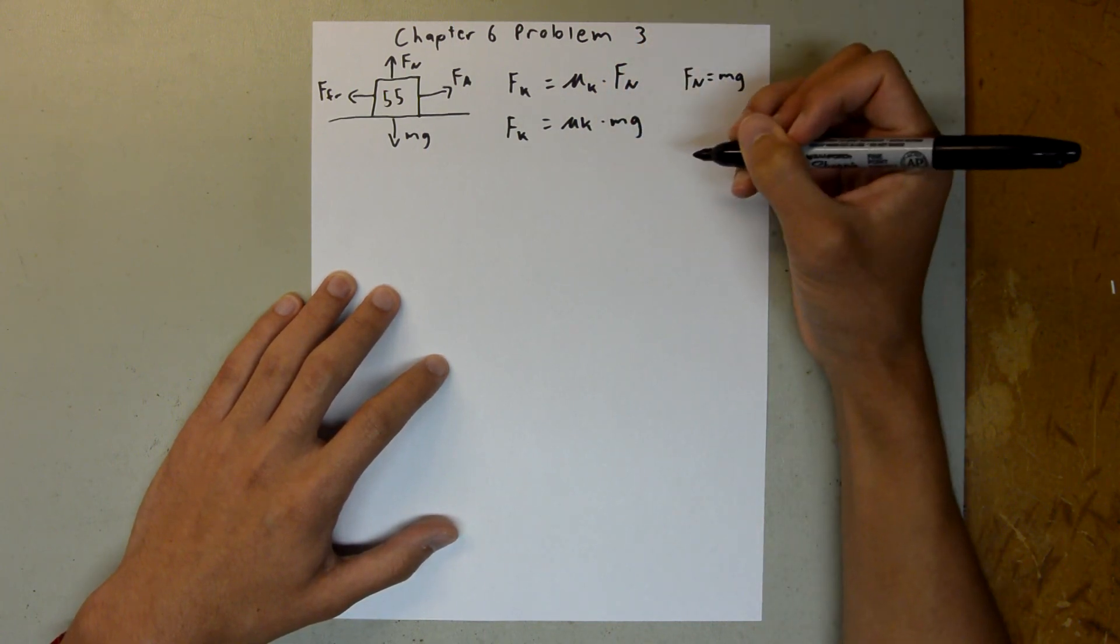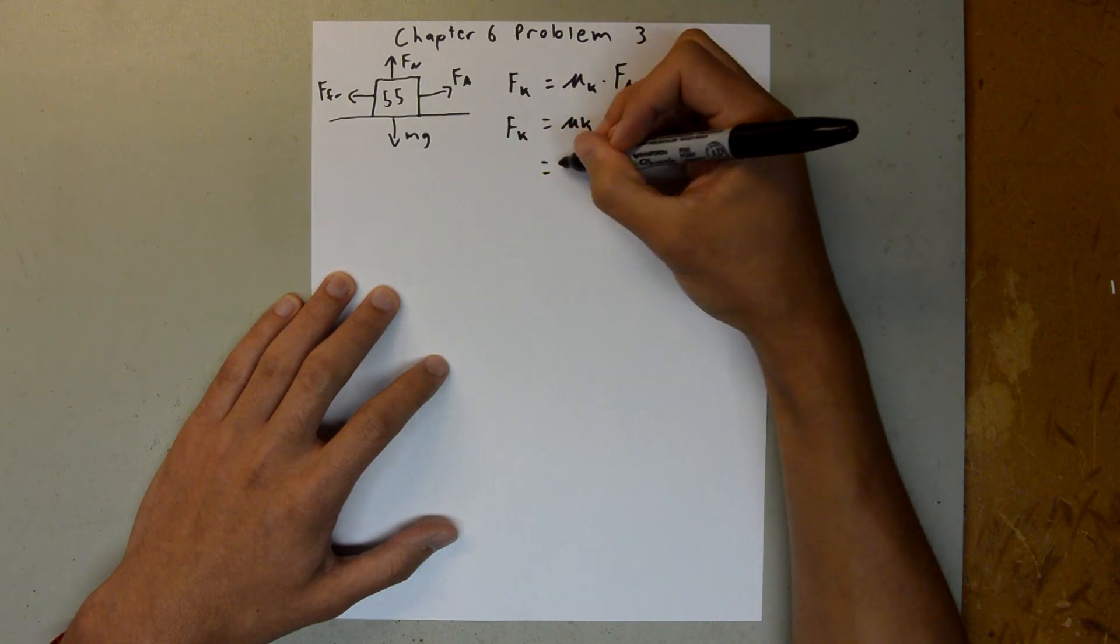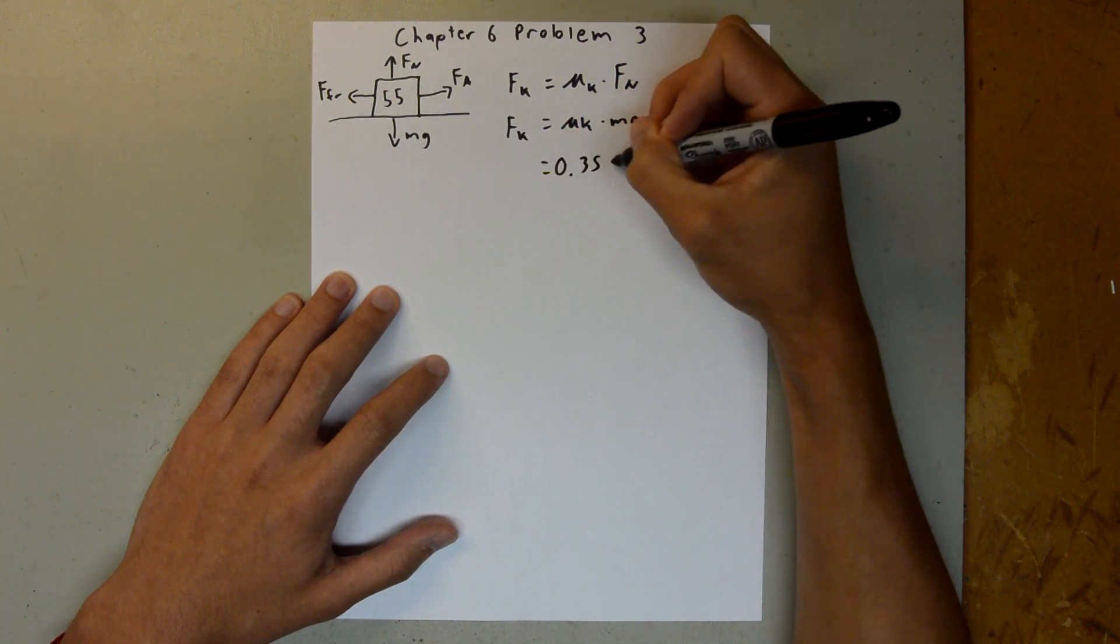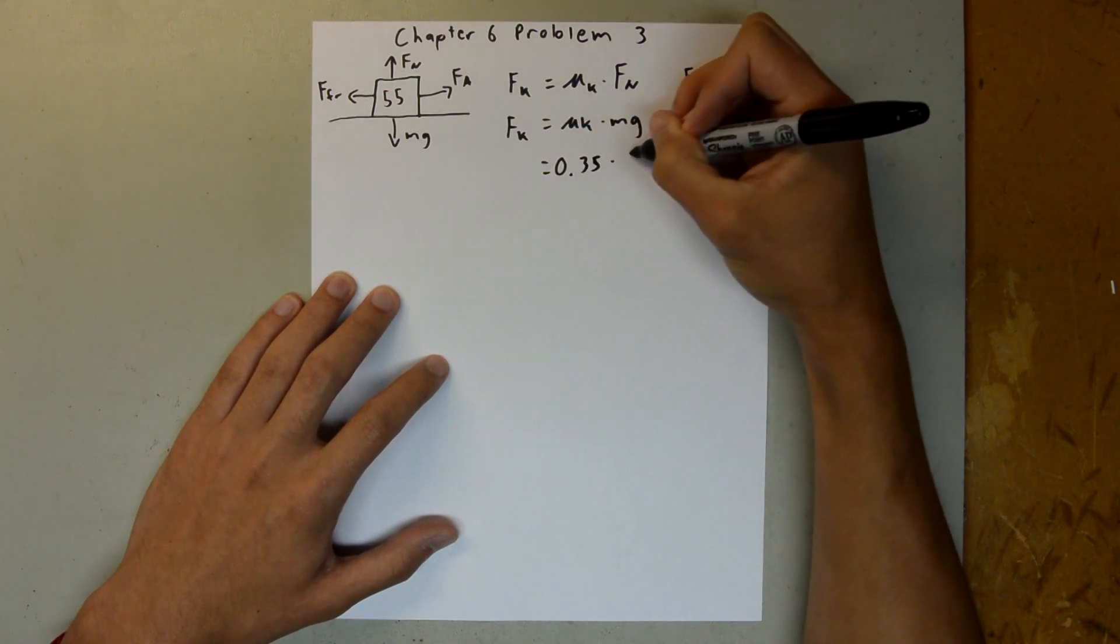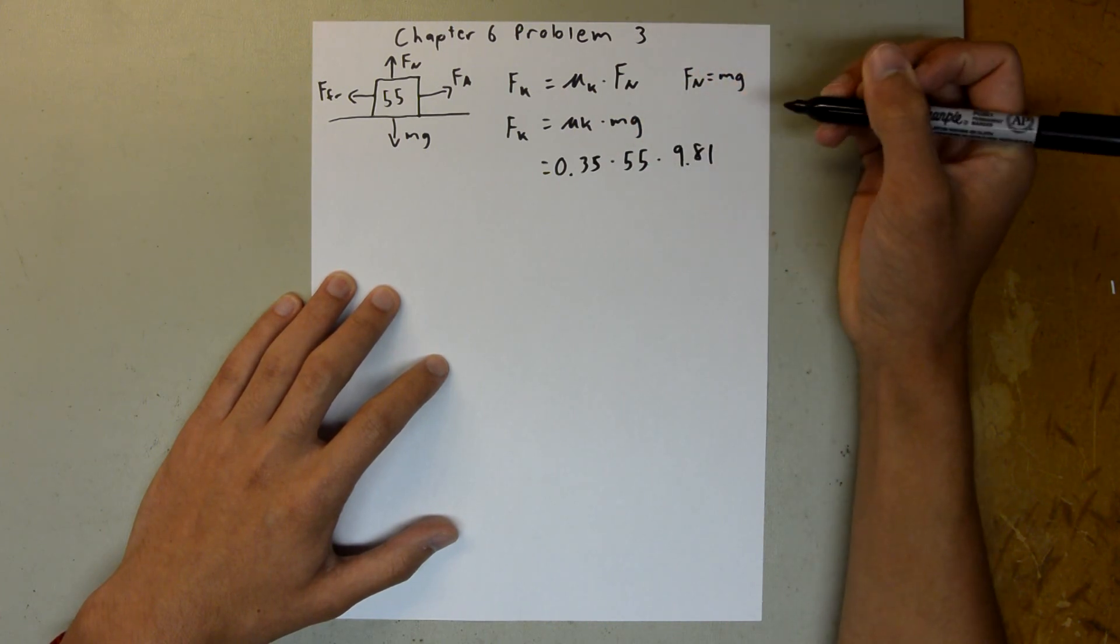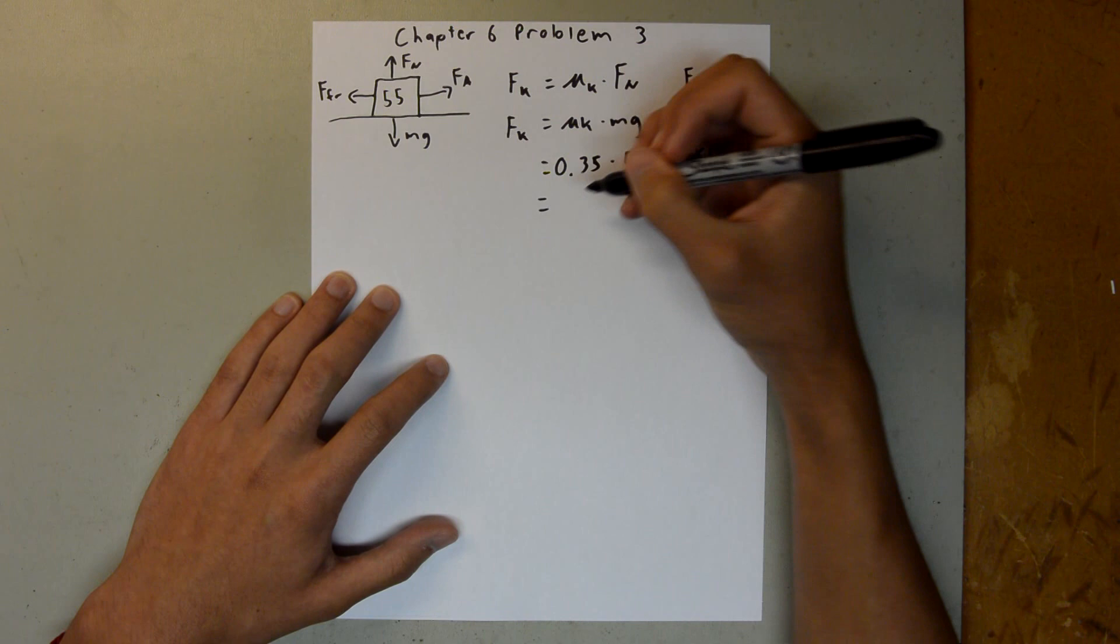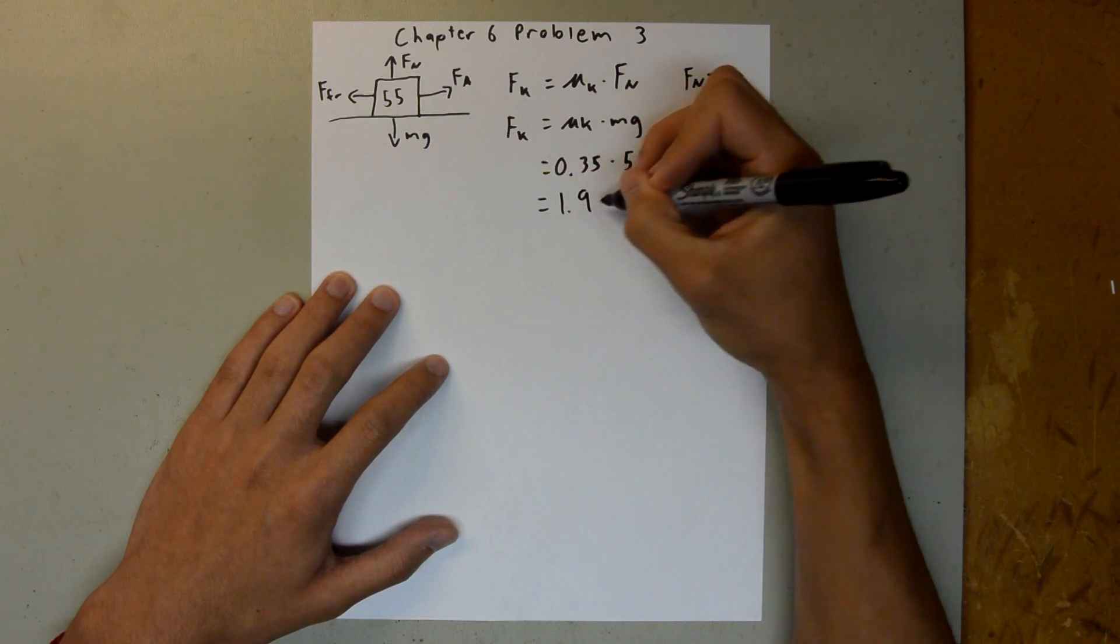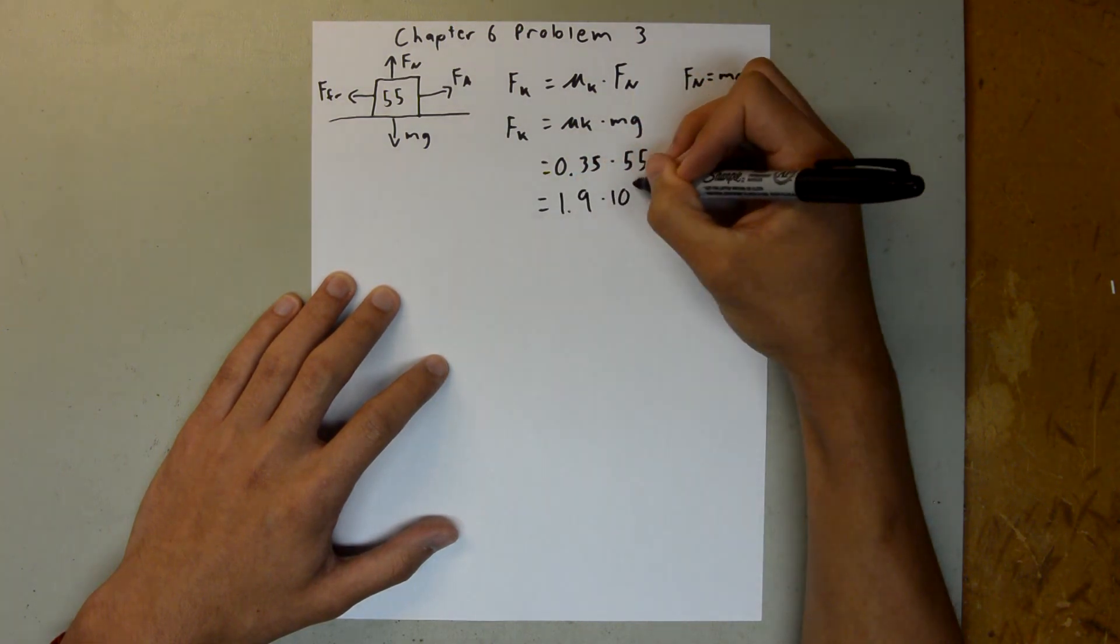And we are given all those values, so we can plug all those in: 0.35 times 55 times 9.81. And if you plug that into your calculator, you should get 1.9 times 10 to the 2 newtons.